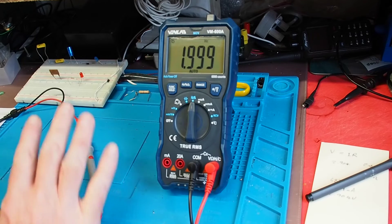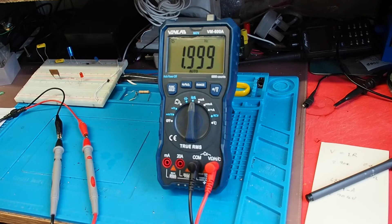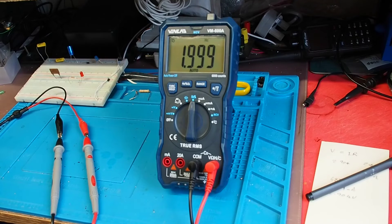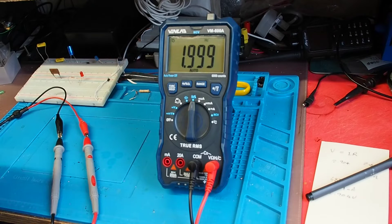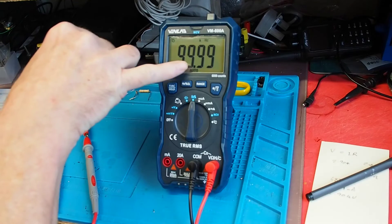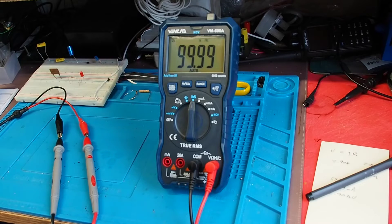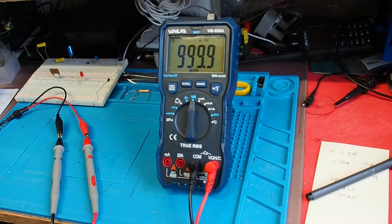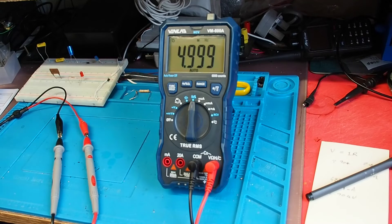On to frequency. Same arrangement, meter leads still attached to the output of the signal generator. Currently it's producing 5 volts peak to peak at 2 hertz and the meter agrees with that. The stated frequency range is up to 10 megahertz. It was okay at 50 hertz, let's jump straight to 100 kilohertz. Yeah, 99.99 kilohertz. Let's try 1 megahertz. Yeah, 999.9 kilohertz, so it's pretty close.